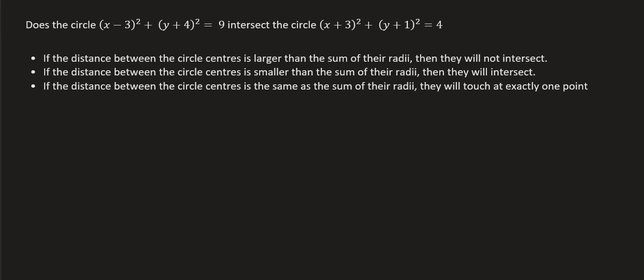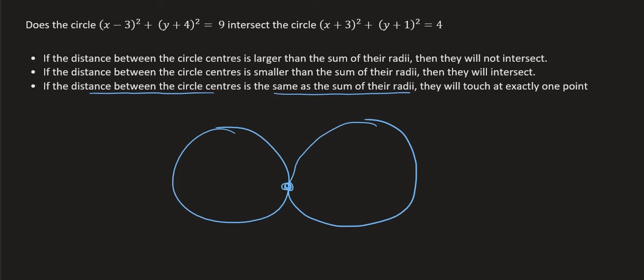In summary: if the distance between the circle centers is larger than the sum of their radii, they will not intersect. If the distance between the circle centers is smaller than the sum of their radii, they will intersect. And there is a third case: if the distance between the circle centers equals the sum of their radii, they will touch at exactly one point. For example, if the distance between centers is 10 and one radius is 3 and the other is 7, they will just meet each other but won't intersect.